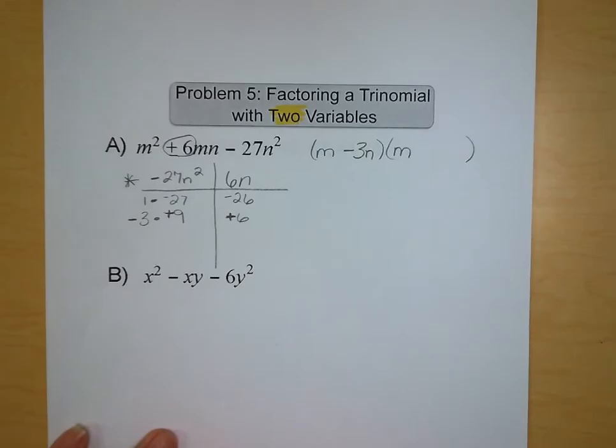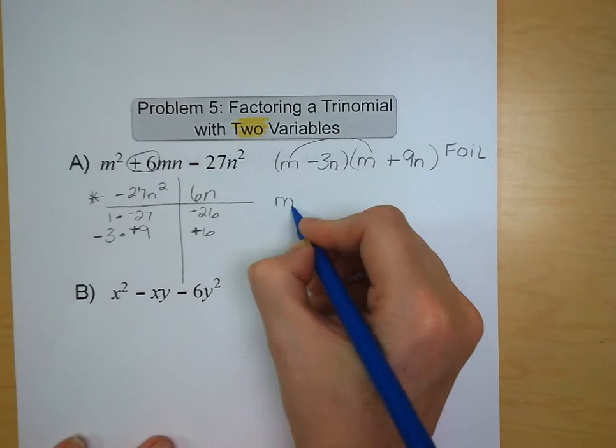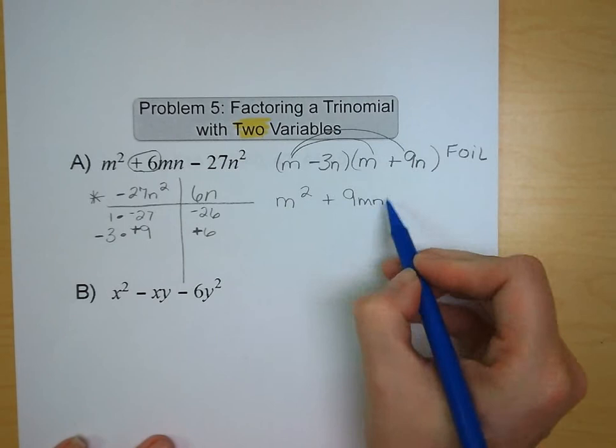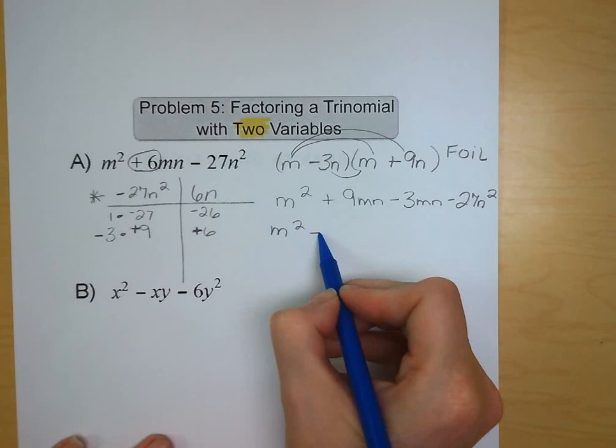And now we're going to FOIL it and check our answer. m times m is m² + 9nm - 3mn - 27n². We can combine our like terms, m² + 6mn - 27n², and that's what we started with. Okay.